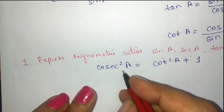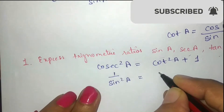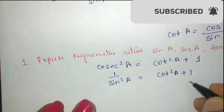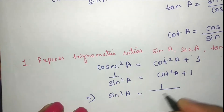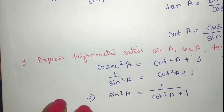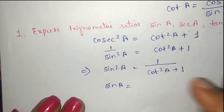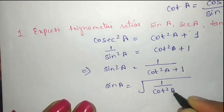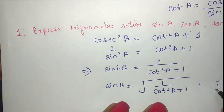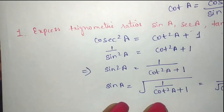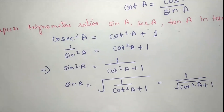For sin a, we use the identity: 1 upon sin²a is equal to cot²a + 1. So sin²a equals 1 upon (cot²a + 1). Taking the square root, sin a equals 1 upon √(cot²a + 1). The root of 1 is 1, and we get sin a = 1 / √(cot²a + 1). This is our first answer.